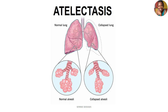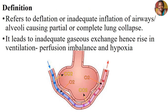Let's start with the introduction. By definition, atelectasis is actually the deflation or inadequate inflation of the airways — specifically the alveoli — leading to either partial or complete lung collapse. There are stages where the alveoli can end up having inadequate inflation or do not get enough air into them, and as a result they collapse, and in the long run the lung also can end up collapsing.